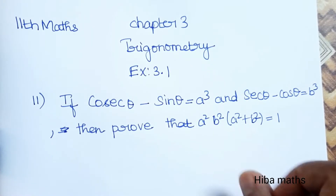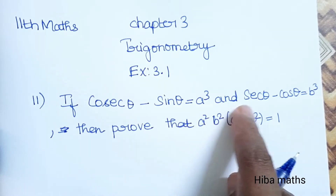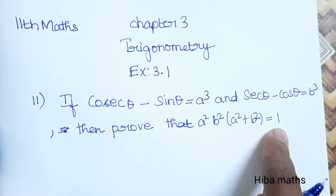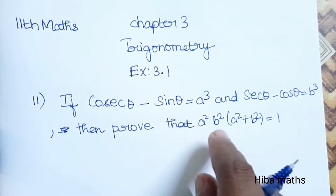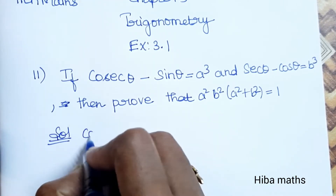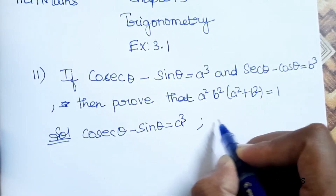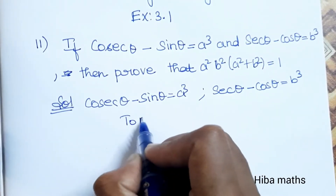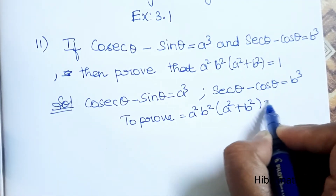Hello students, welcome to Iba Max 11th Standard, Chapter 3 Trigonometry, Exercise 3.1, Question 11. If cosecant theta minus sin theta is equal to a cube, and secant theta minus cos theta is equal to b cube, then prove that a square into b square into a square plus b square is equal to 1.